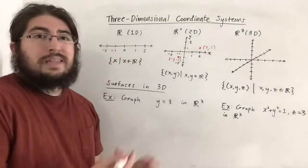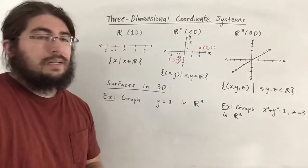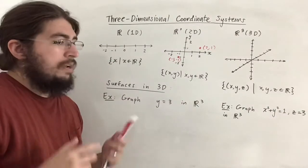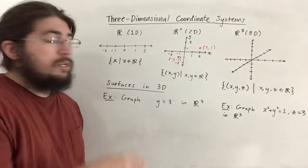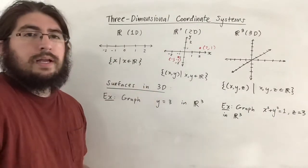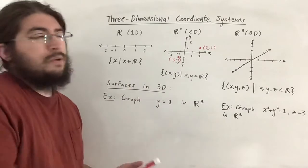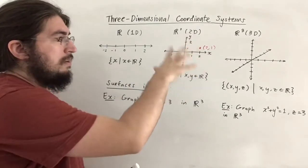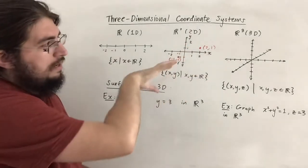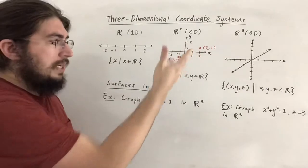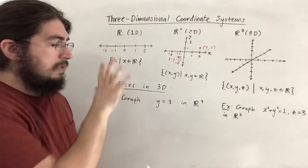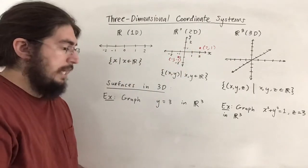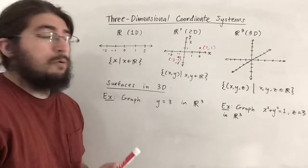Now in R³ this is where things get a little new and kind of hard to grasp, and they're especially hard for me to write on the board because the board is two-dimensional, so I'm kind of displaying a three-dimensional object on a two-dimensional board. It's a little hard to grasp so just bear with me.